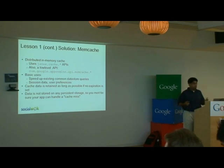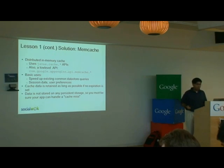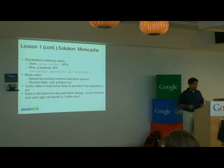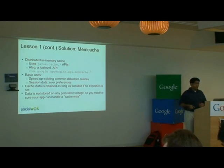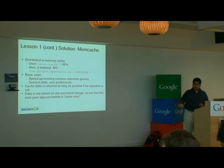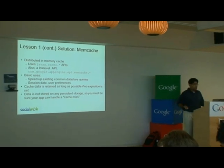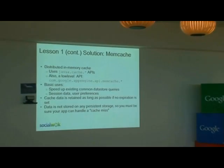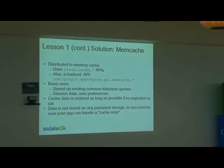Memcache — if any of you are familiar with memcacheD, Google uses memcacheG — is basically a distributed hash table that you can use to scale your web application. The beauty of it is that you're scaling commonly accessed data like session data, user preferences, and you can even use it as a front end to your data store. Basically, you want to use this to store data that you don't need persisted all the time, but that you want to access constantly.